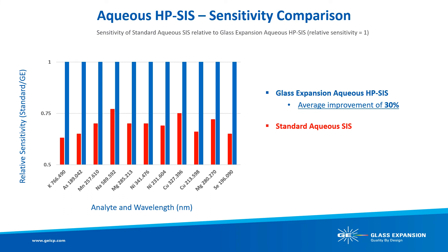Now that we have completed the selection of our Aqueous HP-SIS, let's look at the results acquired using our Thermo Fisher Scientific iCap Pro Duo ICP-OES. We looked at the sensitivity of the standard aqueous SIS relative to Glass Expansion's Aqueous HP-SIS, with relative sensitivity equal to one as baseline. The data shows that relative sensitivity is improved by an average of 30% using the Sea Spray DC nebulizer, TRACE with Helix CT cyclonic spray chamber, and fully ceramic D-torch.